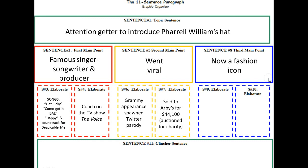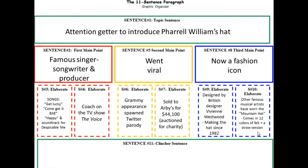Everything here relates to my second point because the Grammy appearance, the Twitter parody, and the auction all show how it went viral and became a crazy phenomenon or meme. Now I'm at my last point: it's a fashion icon. I want to talk about the fashion and who designed the hat. It was designed by British designer Vivienne Westwood, and she's actually made this style of hat since 1982. He bought it a few years ago. Other people have worn this style too — it used to be known as the mountain hat. It actually comes in a bunch of different colors and even has a straw version.